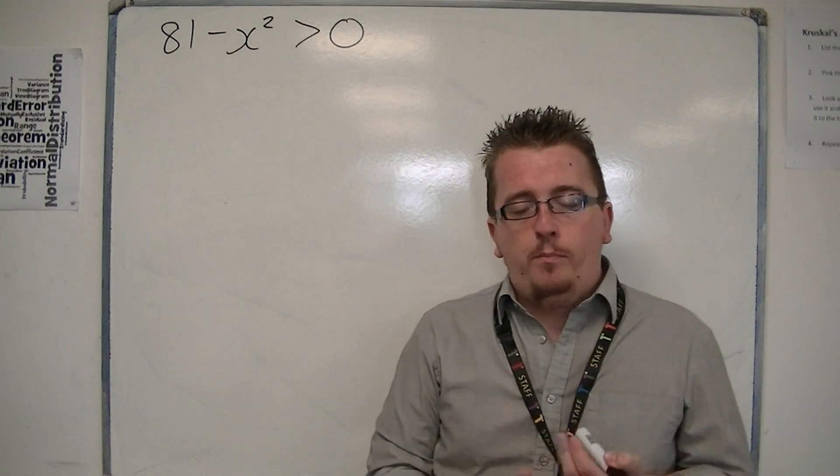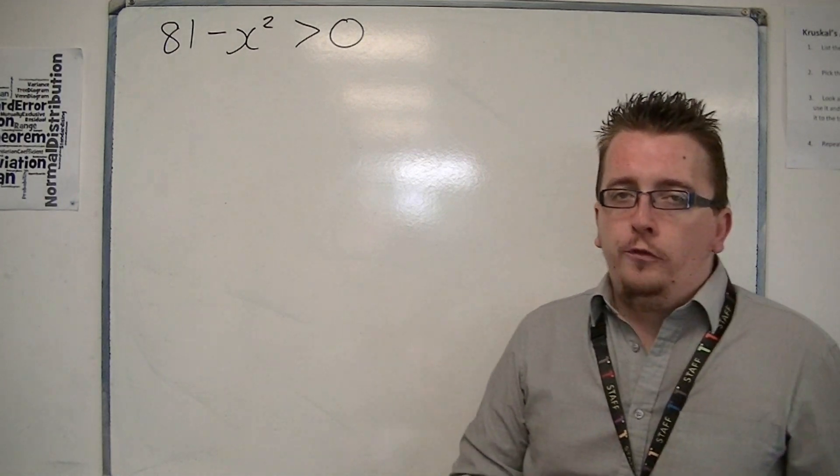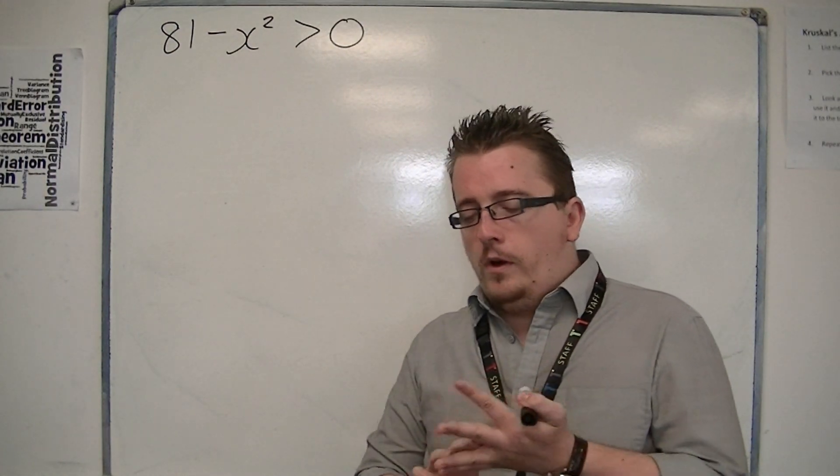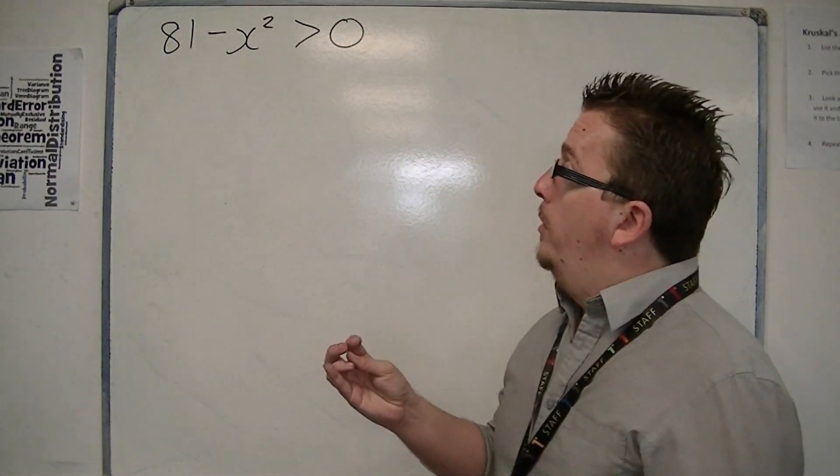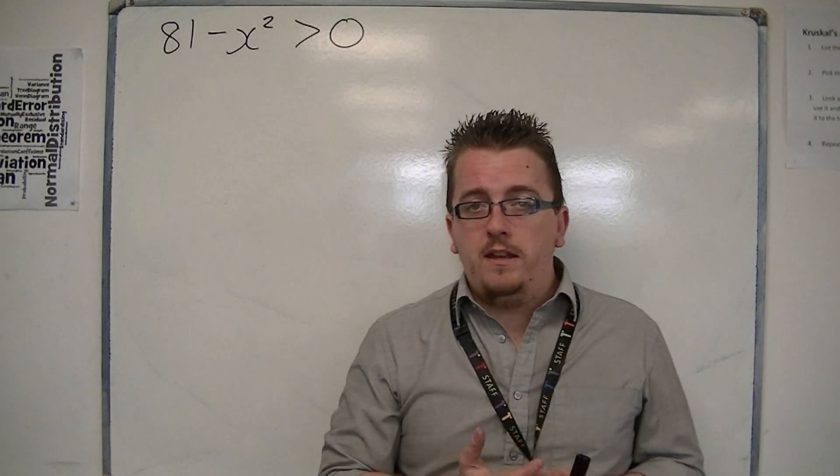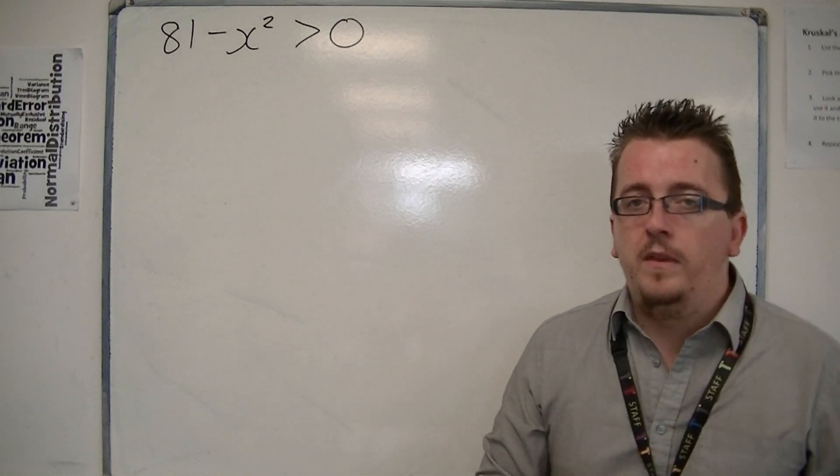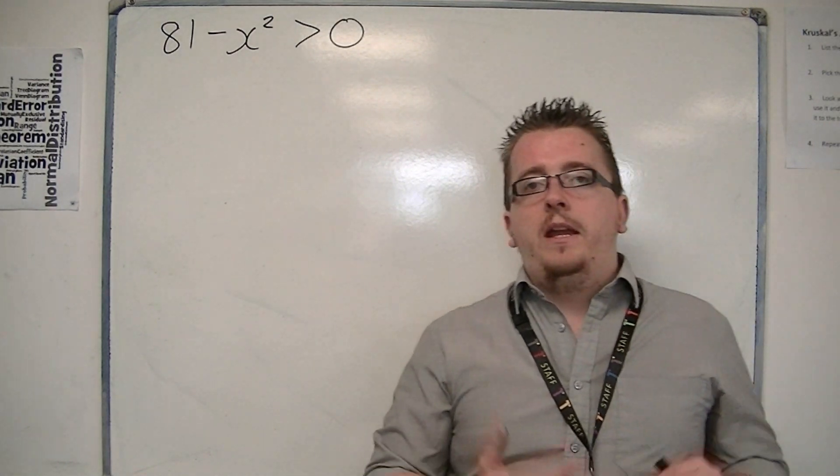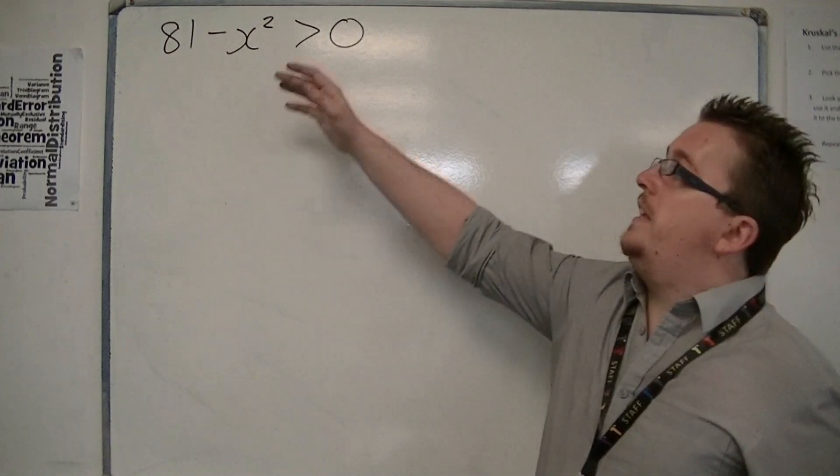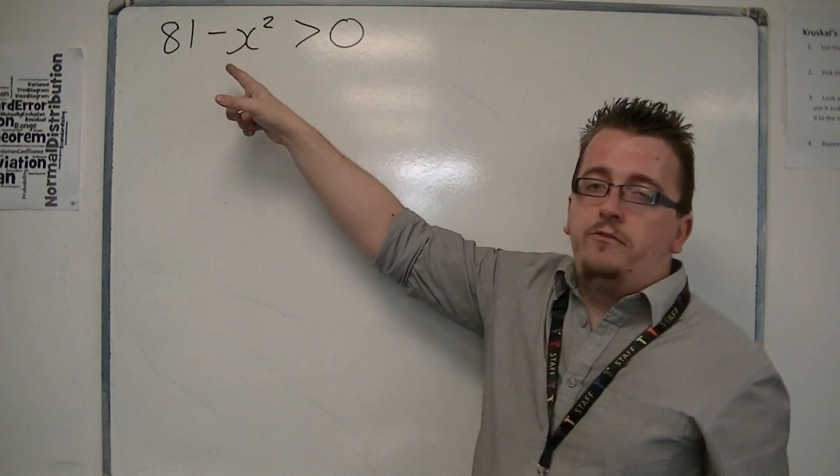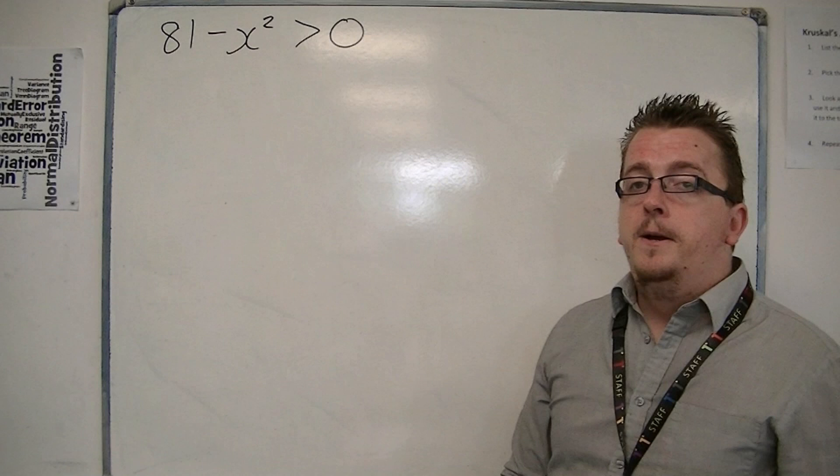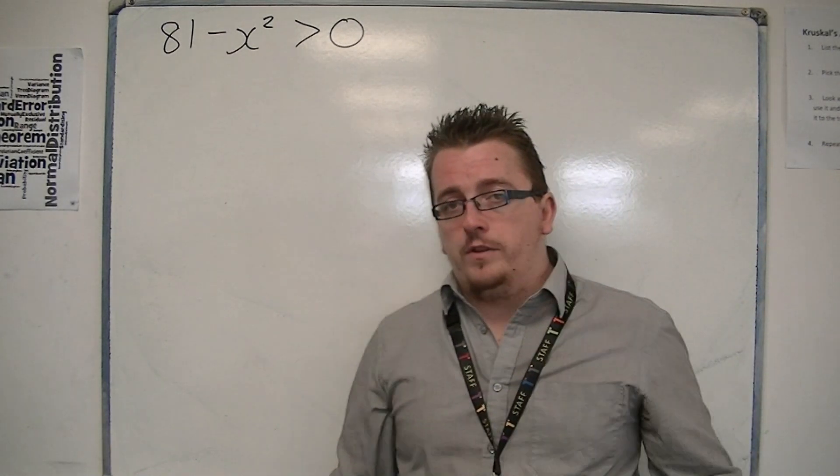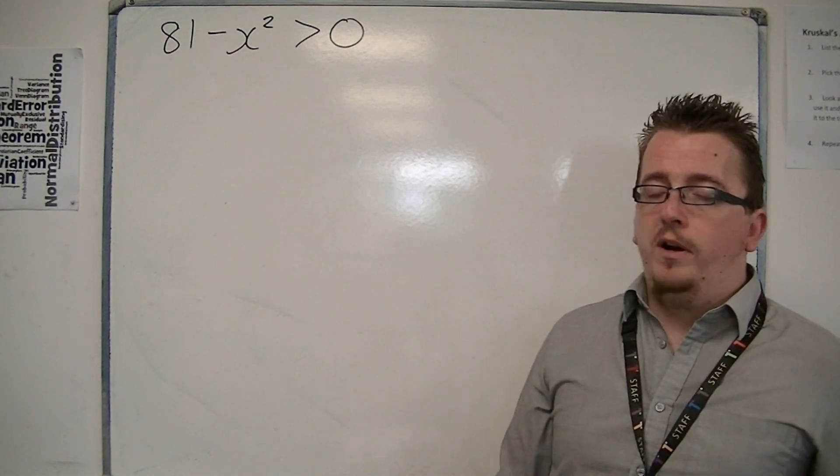Now, there are two possible routes that you can go down in solving an inequality like this. One is to keep the minus x squared as is, perfectly reasonable to do that. Or, you can multiply through by a negative number, in which case you get rid of the negative in front of the x squared, you change the sign of the x squared, but you will also change the inequality symbol. So both solutions and both methods will work perfectly fine.